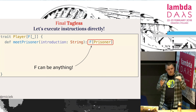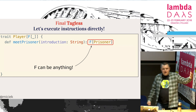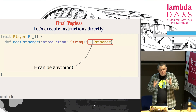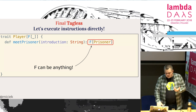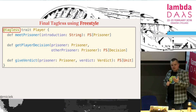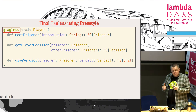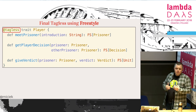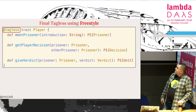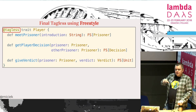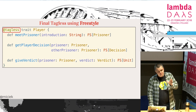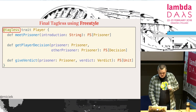In final tagless, meetPrisoner returns F[Prisoner] instead of Free[S, Prisoner]. Very similarly, but instead of Free we have F — a type parameter with a hole inside. The concept is very similar. If we want for comprehension, we'll need an additional bound on the F type, but otherwise we use the same kind of approach and thinking. What we get instead is a less GC-heavy operation. So if our program is really GC-heavy using free, we can think of switching to tagless. In freestyle, it looks like just changing @free to @tagless — semantically they are very similar.